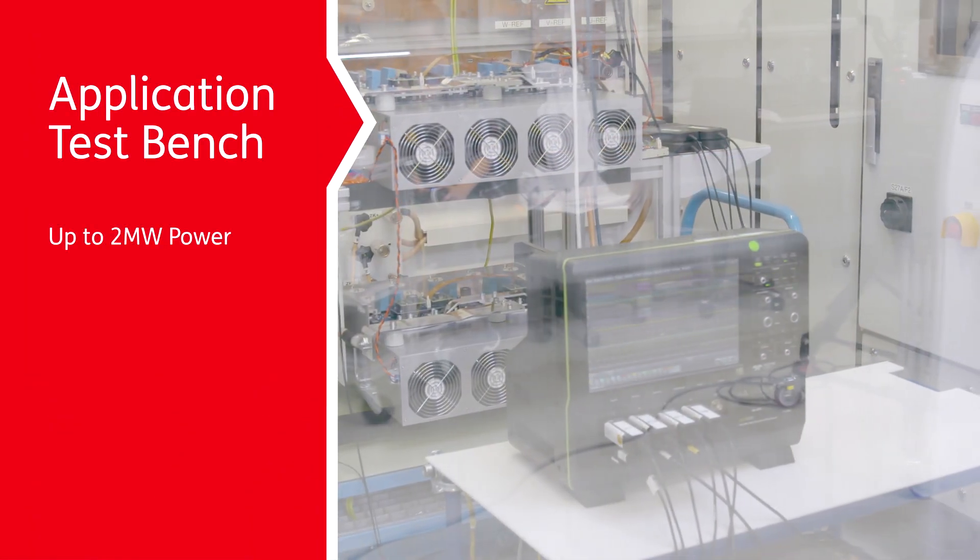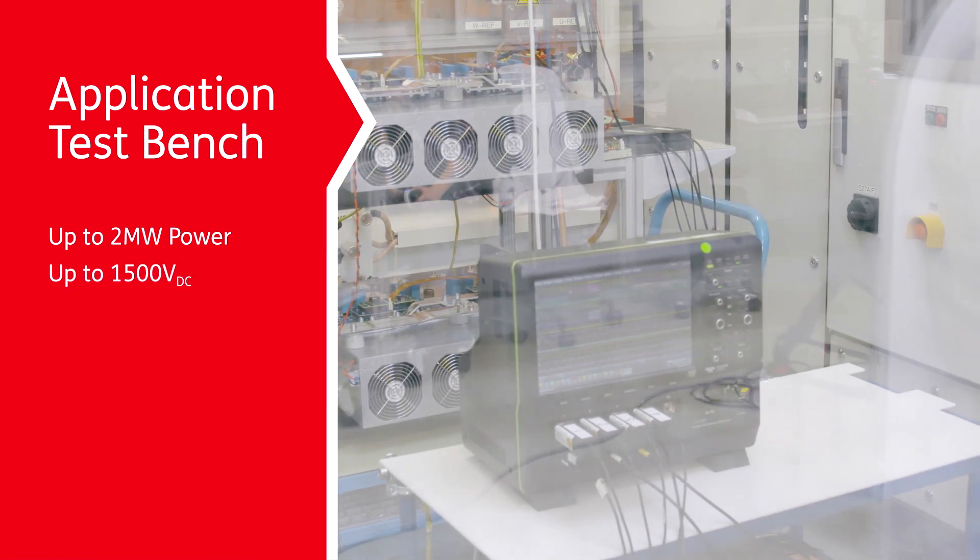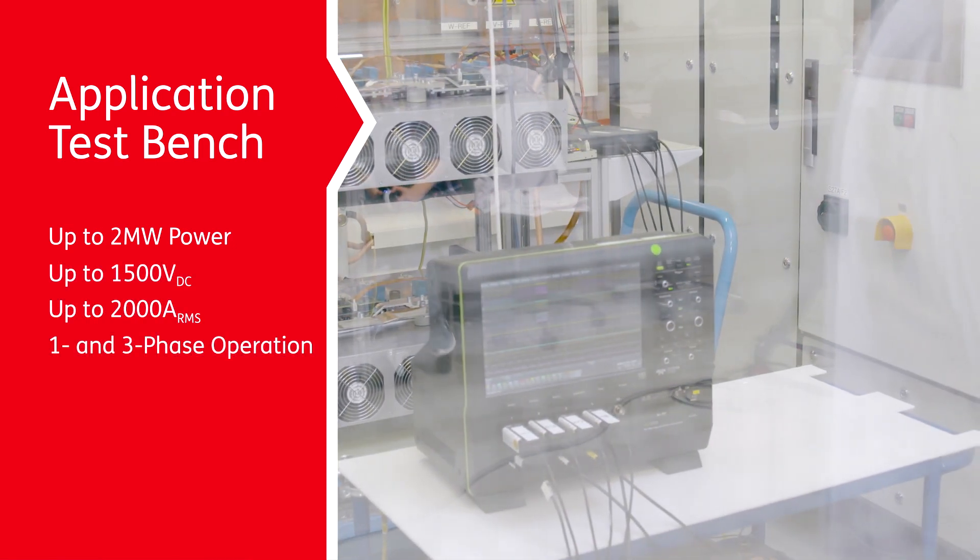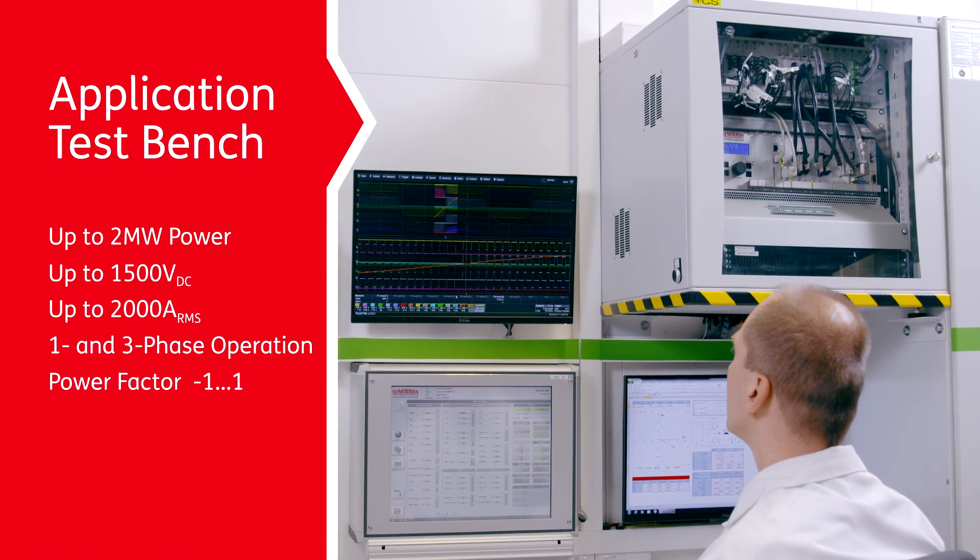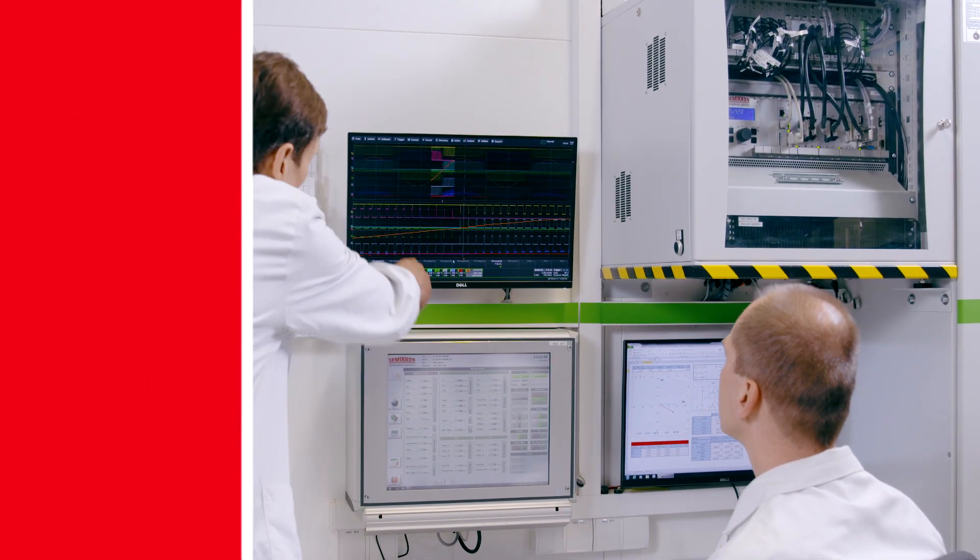Semicron's application test bench can be used to test a wide range of power systems with power ratings up to 2 megawatts, 1500 volts on the DC link, and up to 2000 amps RMS in various inverter configurations.